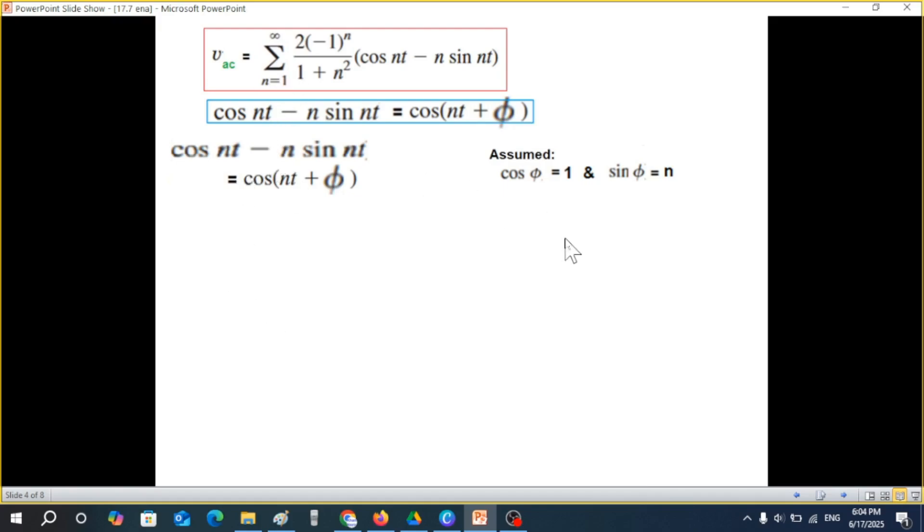So it will be cos(nt + φ). Now this is in proper shape, we can write it now in phasor form. So the given signal has been written in this form. Now a couple of things we have to find. First of all, what is φ? We can find φ from the assumptions that we have made. If we divide sin by cos, that means n divided by one, or we can say sin over cos is tan, tan(φ) is equal to n. Therefore φ will be tan⁻¹(n). So we can put this value here.